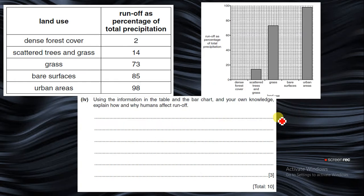This is still part of our question. They said using the information in the table and the bar graph and your own knowledge, explain how and why humans affect runoff of water. These are land uses by humans. You have dense forest cover - if there is dense forest cover you expect high rate of interception, so the rate of runoff will be low. Runoff as a percentage of total precipitation is only 2%. Where you have scattered trees and grass, urban areas and bare surfaces, you find the rate of runoff is high.